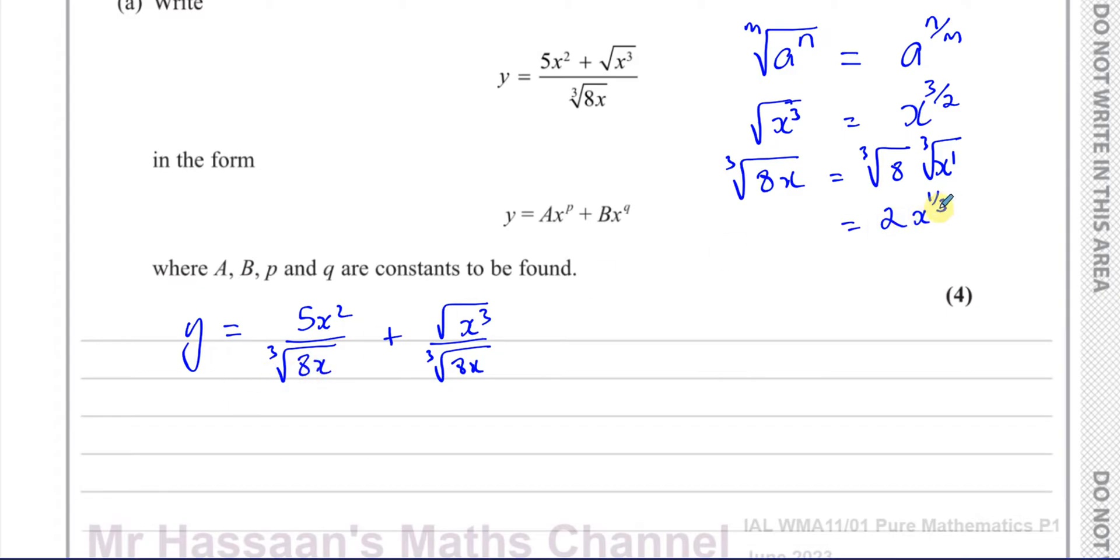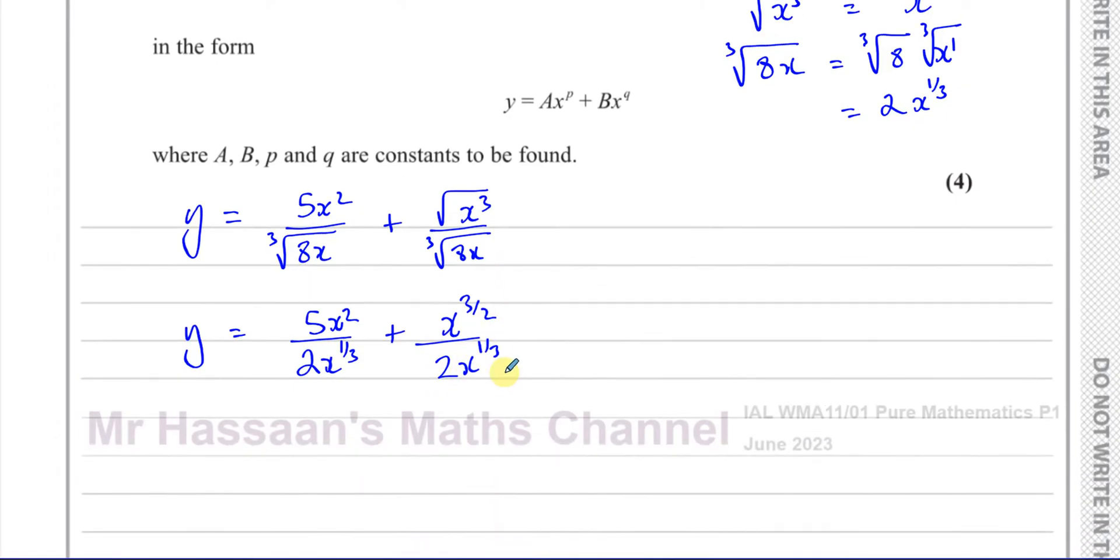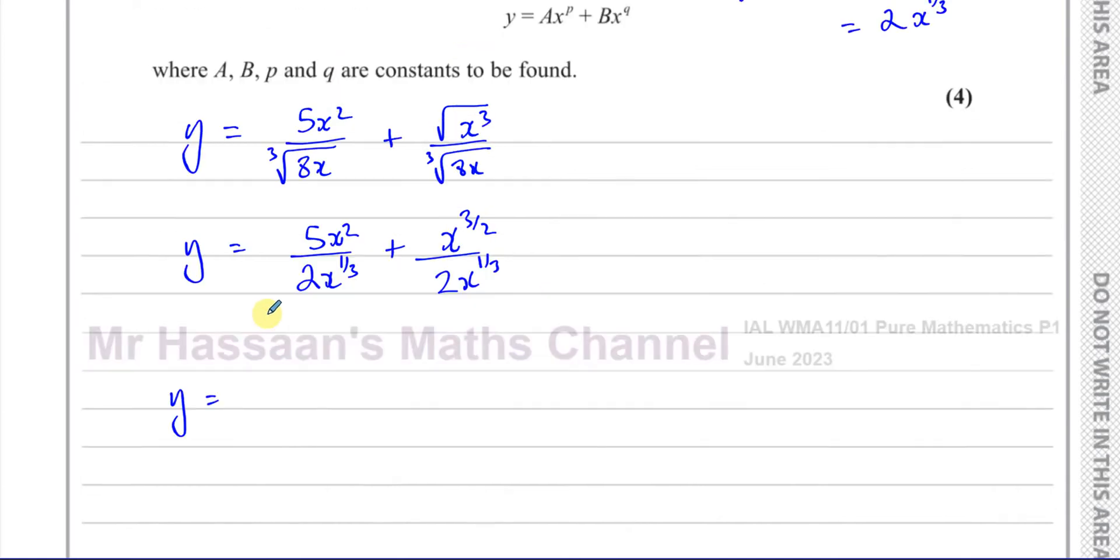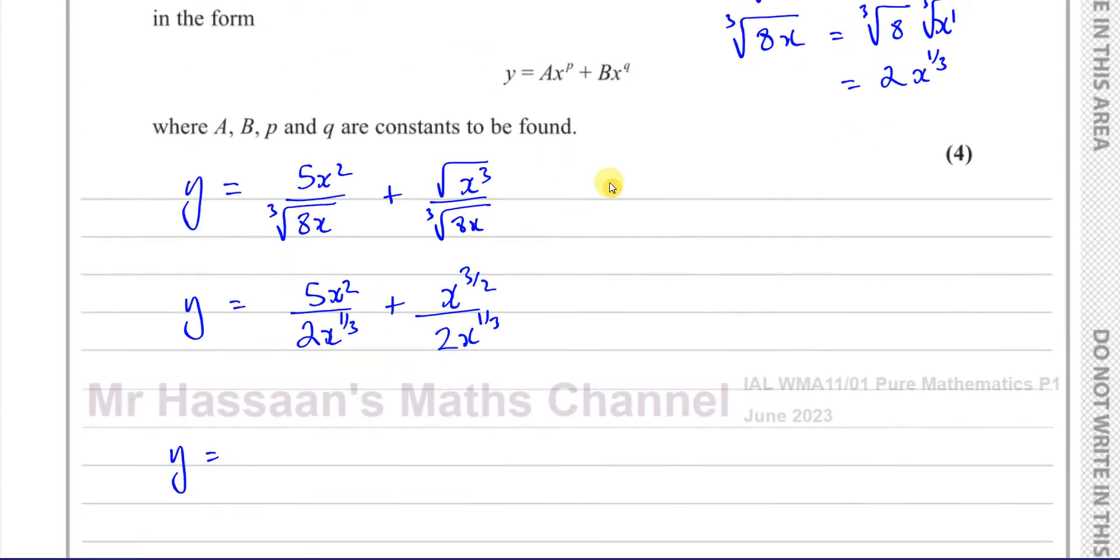So this denominator will be 2x to the power of 1 third. We can say that y equals 5x squared over 2x to the power of 1 third, plus x to the power of 3 over 2 divided by 2x to the power of 1 third.